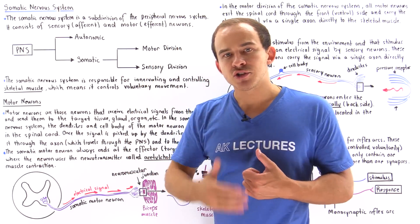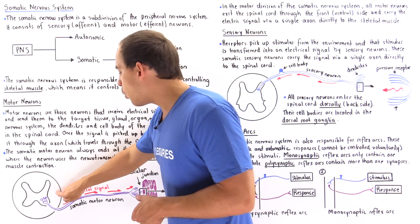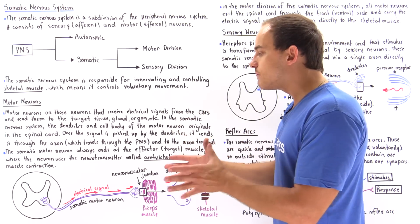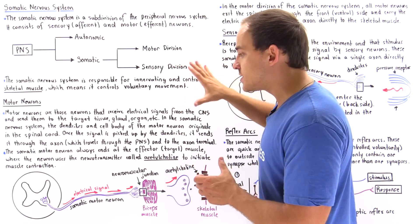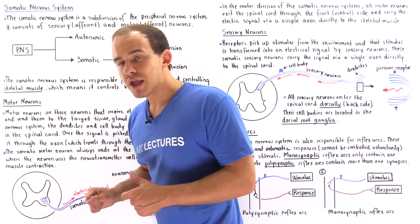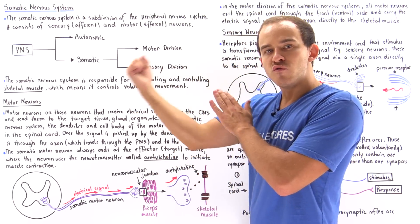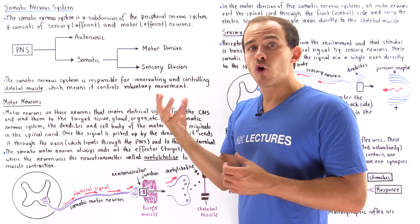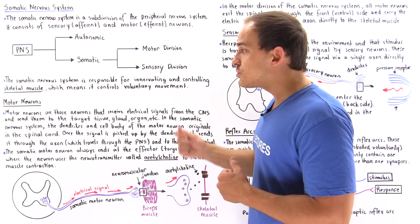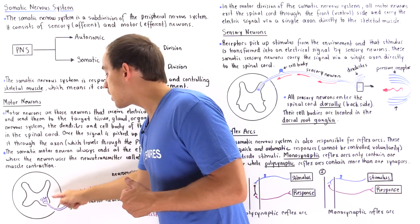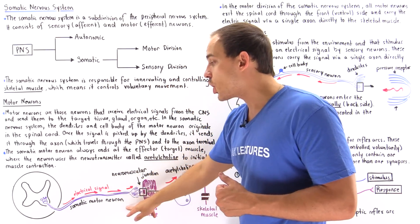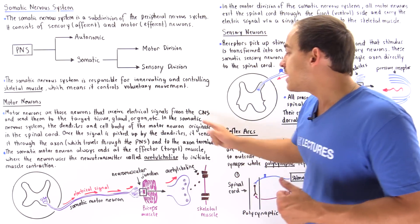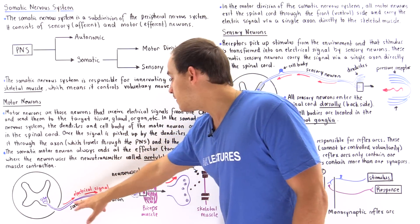Taking a cross section of the spinal cord, we have the white matter and the gray matter. The cell body and dendrites of the motor neuron in the somatic nervous system always begin within the spinal cord. Suppose I want to move my bicep — my brain initiates and creates an electrical signal in the form of an action potential, and that action potential travels and eventually ends up on the dendrites of our somatic motor neuron, which picks up that signal.